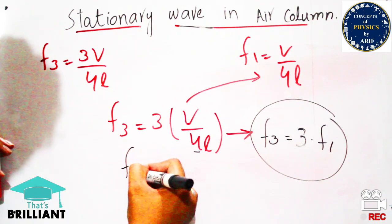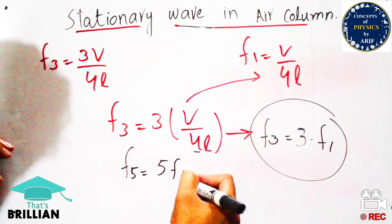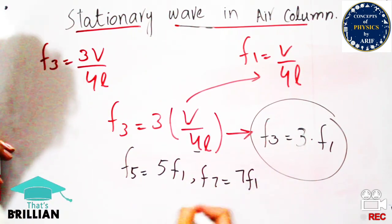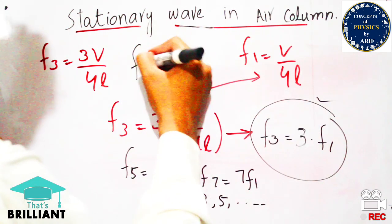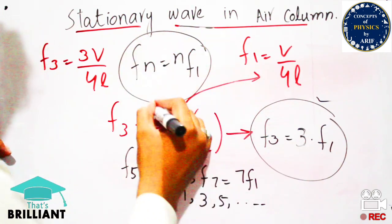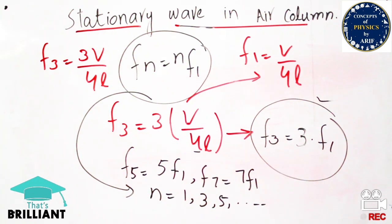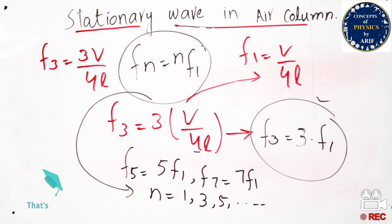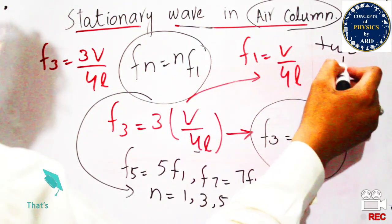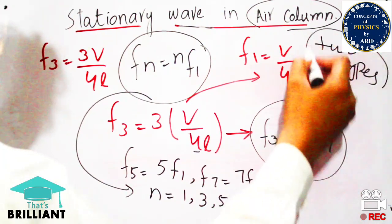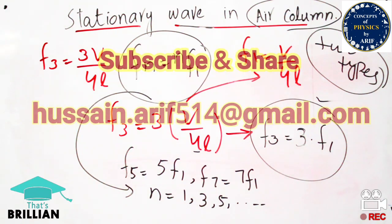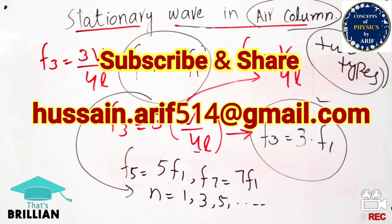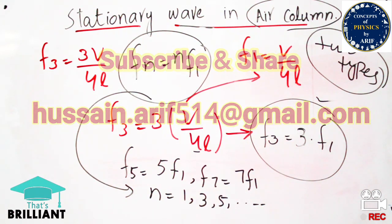From this we conclude that f₃ = 3f₁, f₅ = 5f₁, and so on. The subscript n can represent the modes of vibration, where n = 1, 3, 5, 7, 9... We can generalize the formula as fₙ = n × f₁, applying odd values only, because we are dealing with a pipe that is closed at one end and open at the other. We have now discussed two types of air columns: open at both ends, and closed at one end. That concludes stationary waves in air columns. If you like the video, please subscribe, and if you have questions you can contact me. See you in the next video — bye bye!